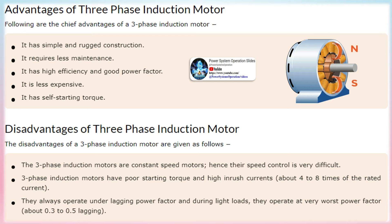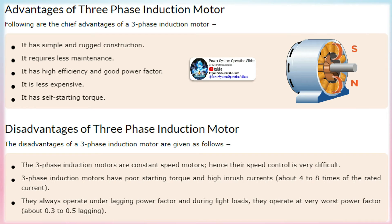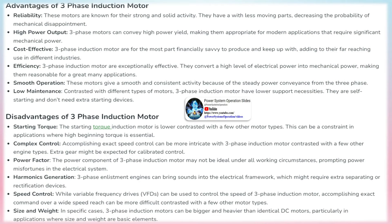The rotating magnetic field induces an EMF in the rotor conductors due to Faraday's law. As the magnetic field rotates, it cuts across the rotor conductors, causing a change in magnetic flux. The induced EMF causes current to flow in the rotor conductors, and this current interacts with the magnetic field, creating a torque that makes the rotor turn. The rotor begins to follow the rotating magnetic field, endeavoring to match its rotational speed. The slip between the rotor and the rotating magnetic field allows the motor to continuously produce torque and rotate.